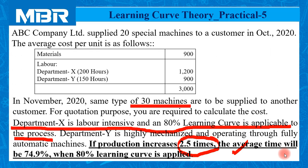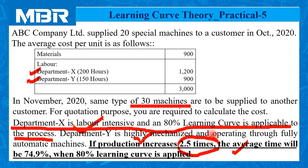Before solving this problem, it is necessary to understand a few important points. We have two different departments — Department X and Department Y. As per the information given, Department X is labor intensive and Department Y is highly mechanized and operates through fully automatic machines. As discussed in the very first lecture, the learning curve is applicable to labor-intensive production techniques, not to capital-intensive ones. So the learning curve calculation is applicable to Department X only.